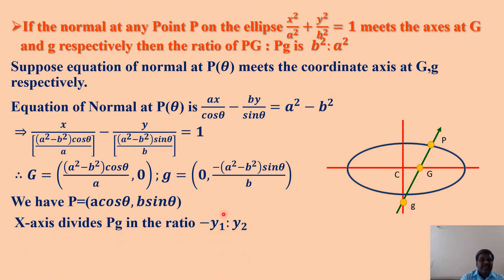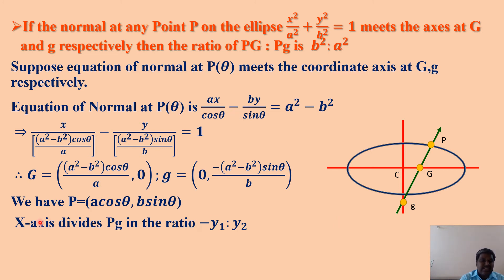The x-axis divides a line segment joining (x₁, y₁) and (x₂, y₂) in the ratio −y₁:y₂. This is a concept from first-year. Similarly, the y-axis divides the same line segment in the ratio −x₁:x₂. So the x-axis divides PG in the ratio −y₁:y₂.